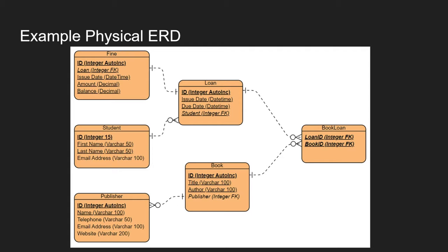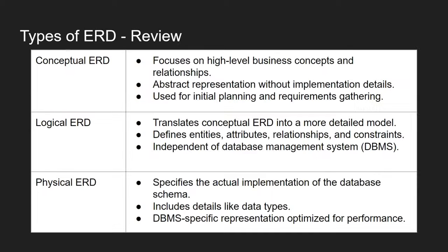Looking at the physical ERD — it looks fairly similar to the logical diagram, but you'll notice we've now included data types for each attribute, such as datetime, integers, and varchar with a specified maximum length. Also, where we had a many-to-many relationship, we've now included the physical junction table with a composite key to connect the loan and book tables, breaking it down to the level of detail needed for implementation.